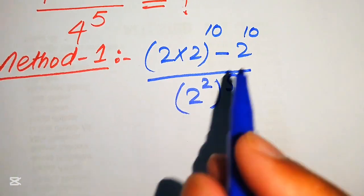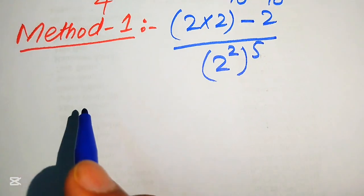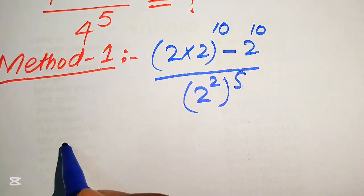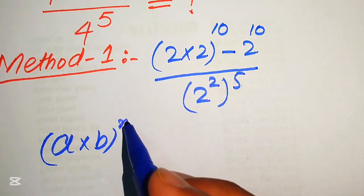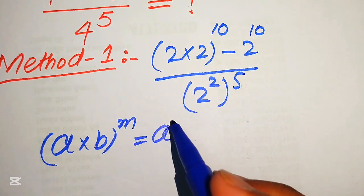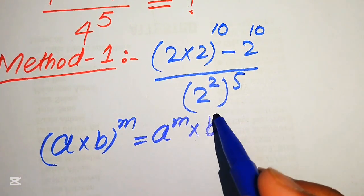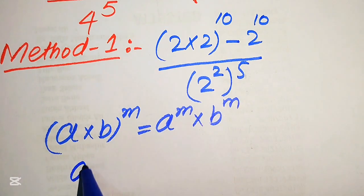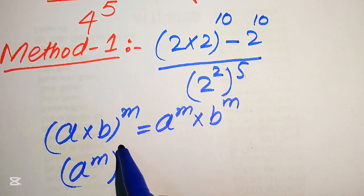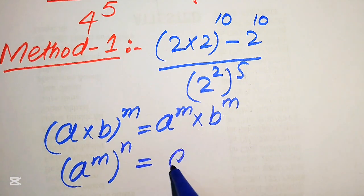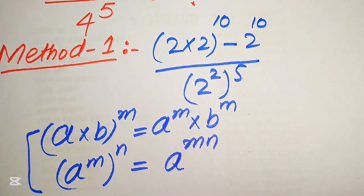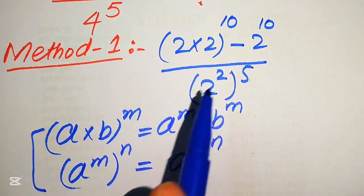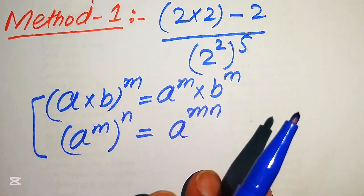In the next step we apply exponent laws. The first law: if you have (a × b)^m, it equals a^m × b^m. The second law: if you have (a^m)^n, it equals a^(m×n). We need both of these exponent laws to move forward.